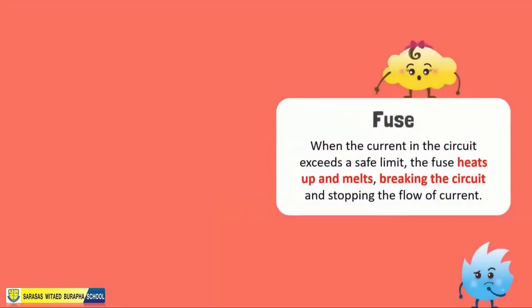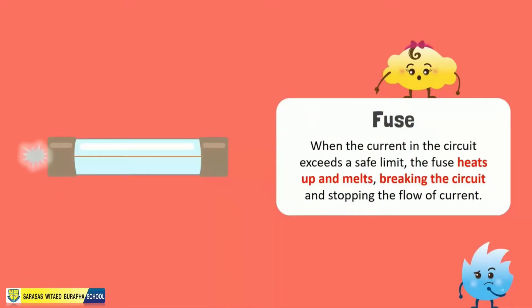A fuse is a piece of thin conducting wire with a low melting point connected to the circuit. When the current in the circuit exceeds a safe limit, the fuse heats up and melts, breaking the circuit and stopping the flow of current.